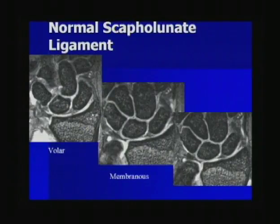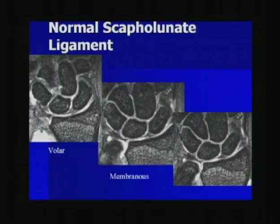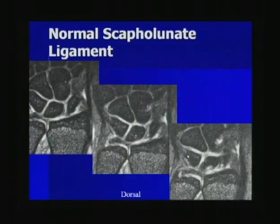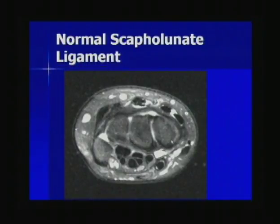On imaging, the volar component of the scapholunate ligament is fairly thick. As we move into the membranous portion, it becomes thinner and is often triangular in shape. The dorsal component consists of striated bands that cross across the scaphoid and lunate, is very thick, and is the most important in maintaining stability. On an axial image you can again see the thick dorsal and volar components of the scapholunate ligament.